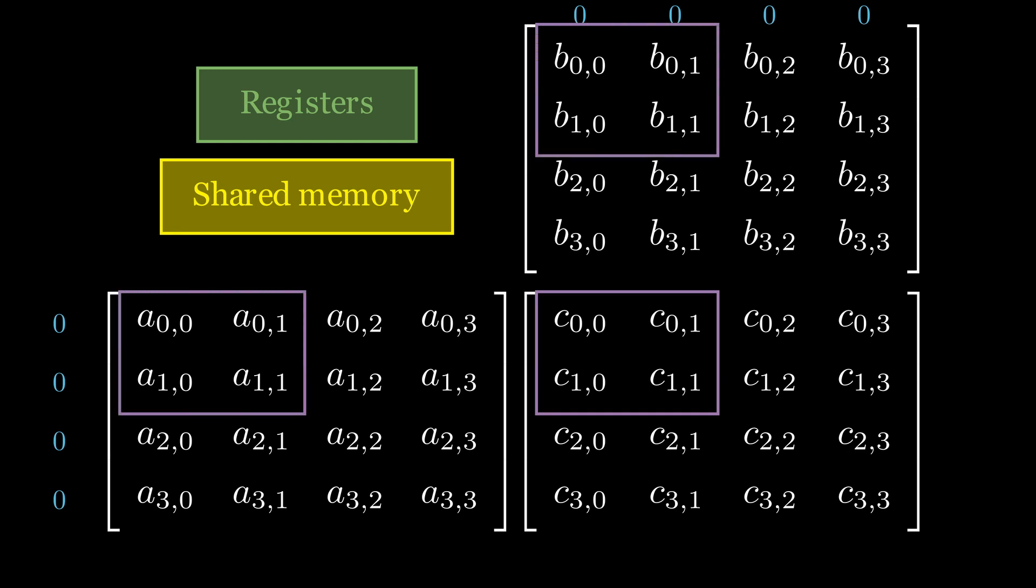We start by splitting our input matrices into tiles that are of the same shape as our blocks. Each thread in the block then loads the corresponding value in each input matrix into shared memory and proceeds with calculating a partial dot product, but instead of reading the values from slow global memory, we read from fast shared memory instead.